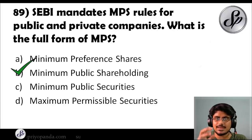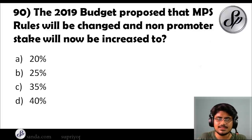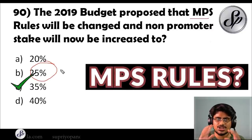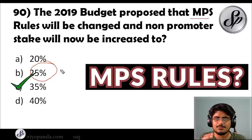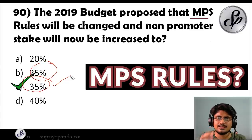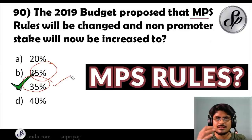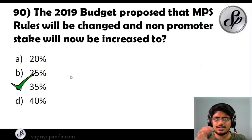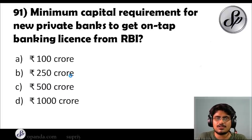Question ninety: the 2019 budget proposed that MPS rules would change and non-promoter stake would be increased to how much? The answer is 35%. Earlier, MPS rules stated that 25% of shares in a listed company must be with the general public. The 2019 budget proposed raising this to 35%, which was contentious — companies would need to offload 10% of their shares to the public through an offer for sale or an FPO, which would be expensive.